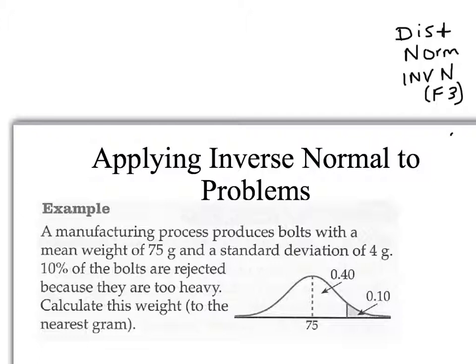When we do an inverse problem, here's an example: a manufacturer produces bolts with a mean weight of 75 and a standard deviation of 4 grams. 10% of the bolts are rejected because they are too heavy — those are the 10% on the right-hand end. We need to calculate the minimum weight, so we're looking for that X value when we know that 10% are rejected.